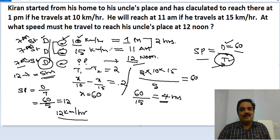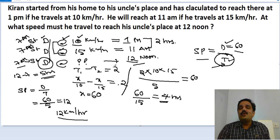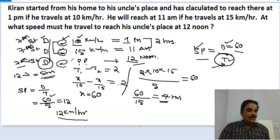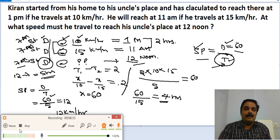Hope you understood this question — it's a beautiful one. To solve it you need a basic level understanding of the chapter. To summarize: he estimated to reach at 1 p.m. at 10 km/h, and at 11 a.m. at 15 km/h. Using these two statements I found the distance as 60 km. From the distance and arrival time I found the starting time as 7 a.m. With a 5-hour journey time, the required speed is 60 divided by 5, which is 12 kilometers per hour.